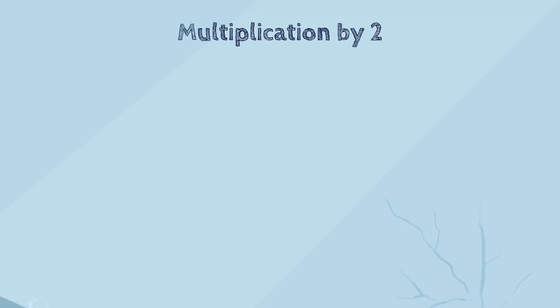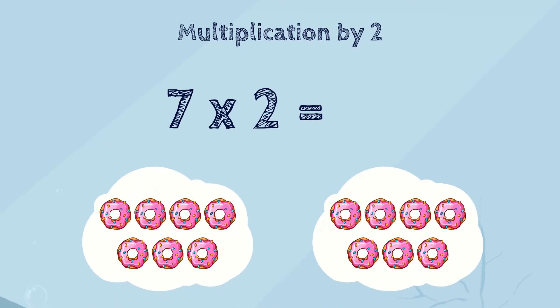Let's look at the example. Seven times two. What does this mean? It means we have two groups of seven items, and so we need to add seven two times. That will be seven plus seven.